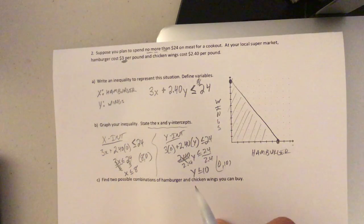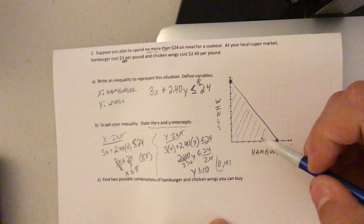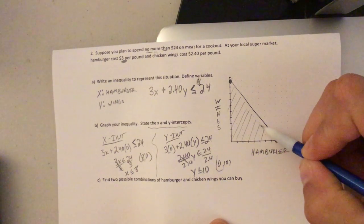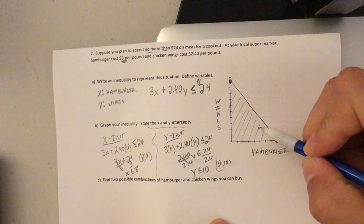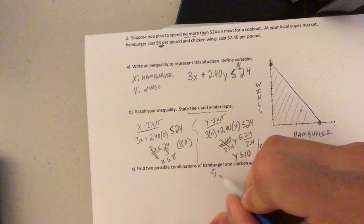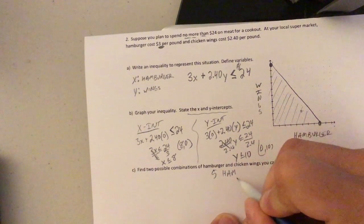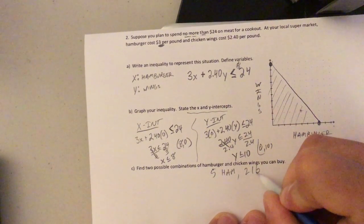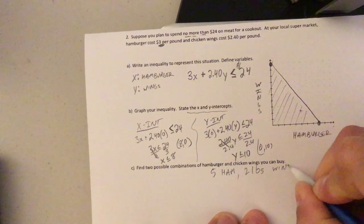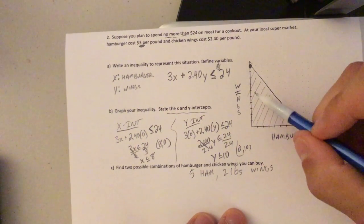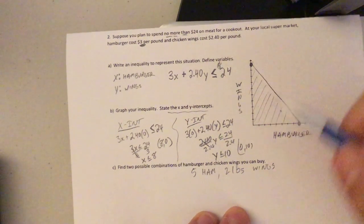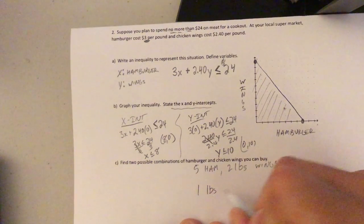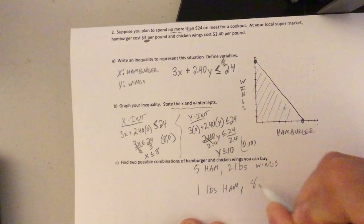Find two possible combinations of hamburgers and chicken wings you could buy. So any point here in the shaded region, just looking like right there, right there's a good point. Well, that's, let's see, that sure looked like it was five comma two, five hamburgers, well, five pounds of hamburgers and two pounds of wings. That would work. That's only one of multiple combinations. You could say, I'm going to buy one pound of hamburger and eight pounds of wings. That would work too.